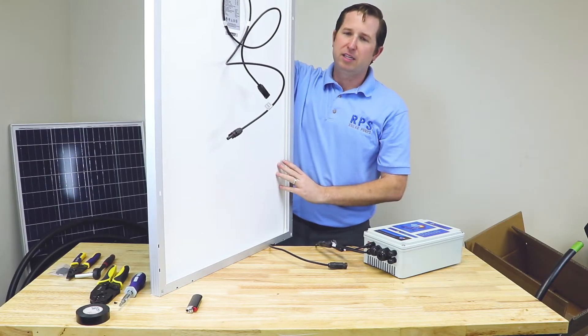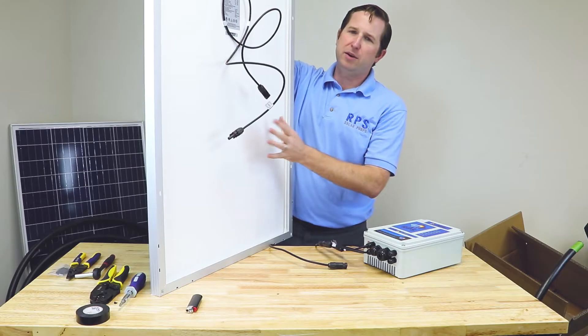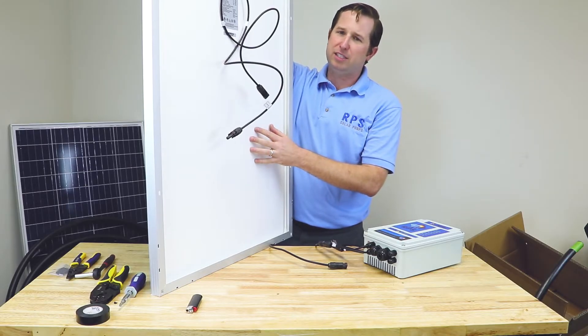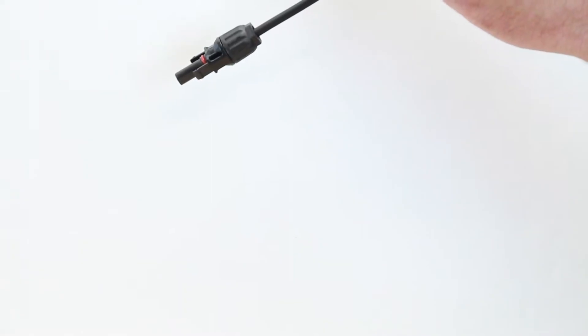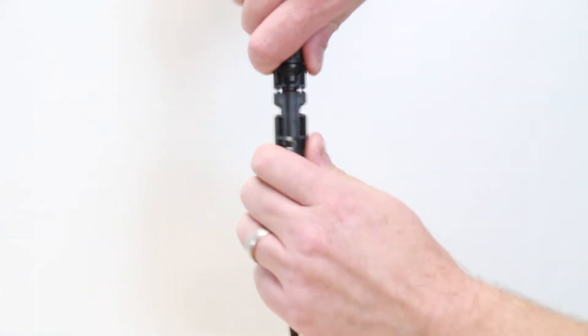MC4 connectors come off the back of the panels. If you look in your user manual, it'll tell you how to hook up your panels in parallel and series to get the proper connections.